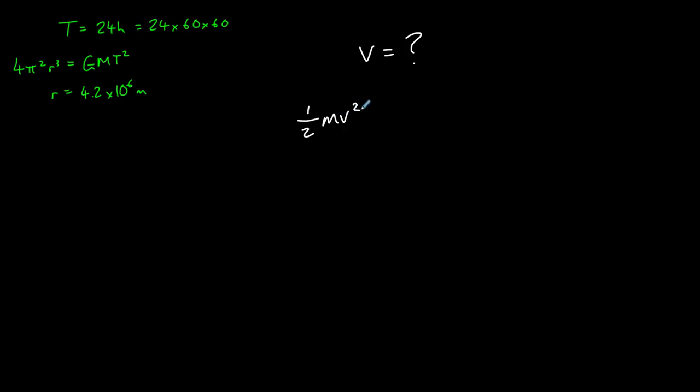The bullet will need enough kinetic energy to overcome the gravitational potential energy on the Earth's surface. So kinetic energy, half mv², is equal to GMm divided by R. So this is the potential energy on the Earth's surface, and this is the kinetic energy that we'll need to provide in order to at least match that. Rearranging, this gives us v² is equal to 2GM over R. So v is equal to the square root of 2GM divided by R.